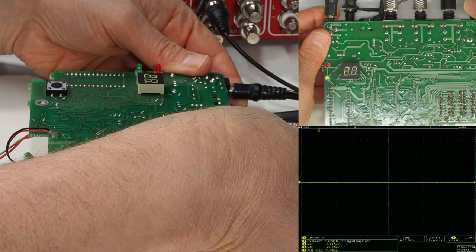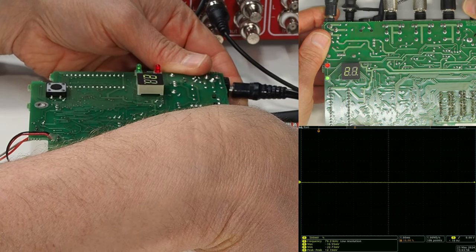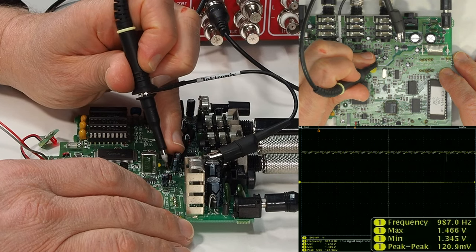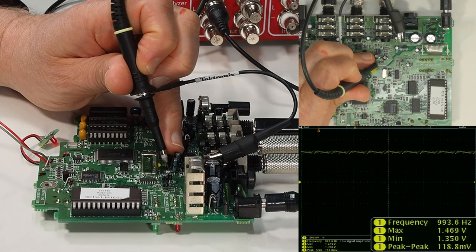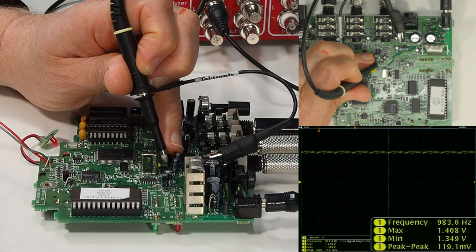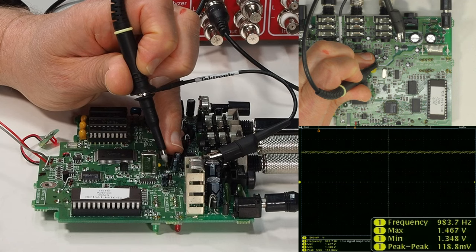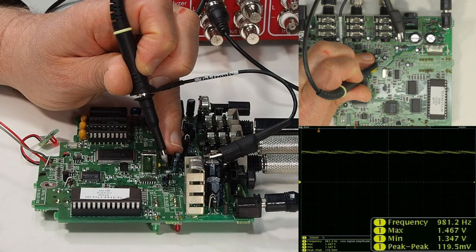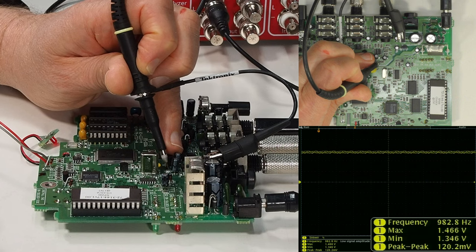Bumping up the test signal to just barely light up the clip LED, we see positive 1.467 volts on the oscilloscope. Again, that's quite close to our plus 1.497 volt calculation. I'd chalk up most of this error to my hasty adjustment of the input gain knob.